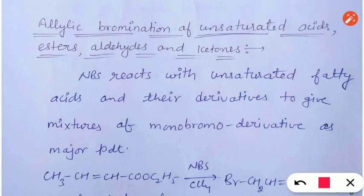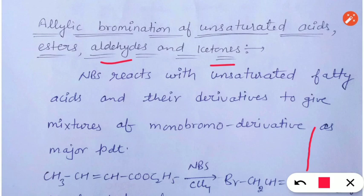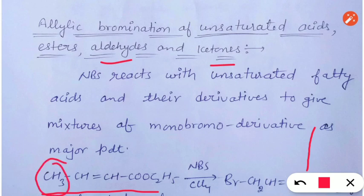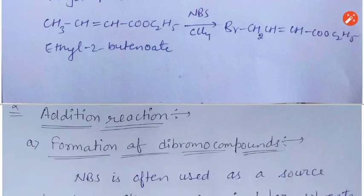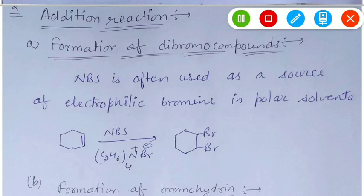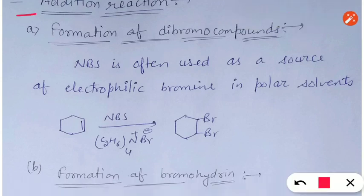Another reaction of N-Bromosuccinimide is allylic bromination of unsaturated acids, esters, aldehydes, and ketones. These compounds can also be brominated at allylic positions because stable allylic radicals are formed. In the example shown, substitution of hydrogen with bromine occurs at the allylic position.